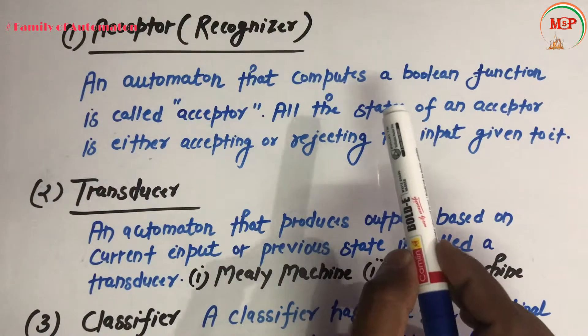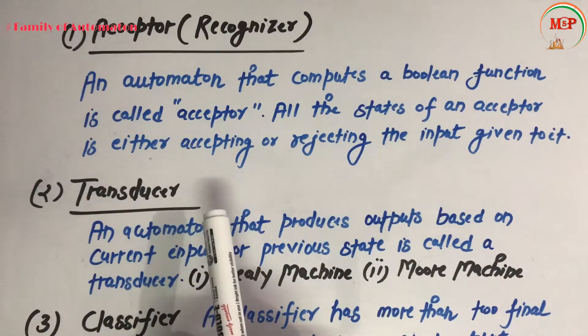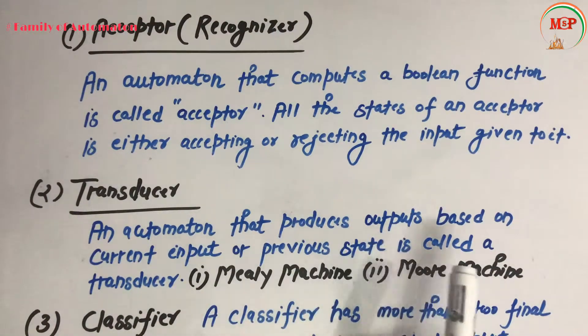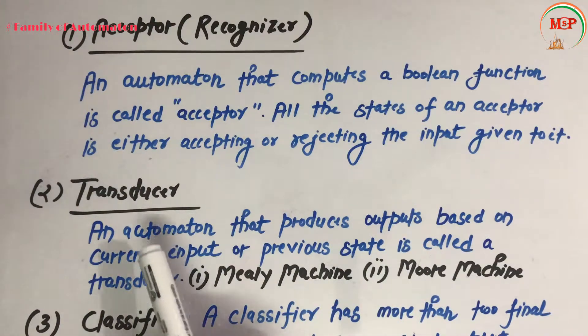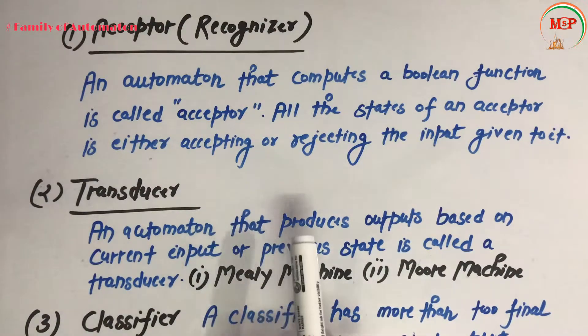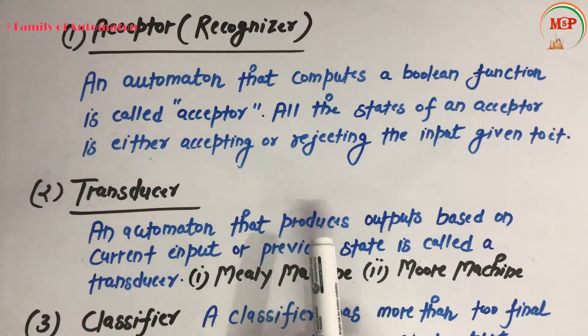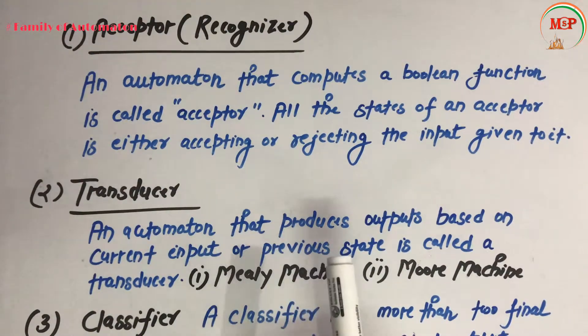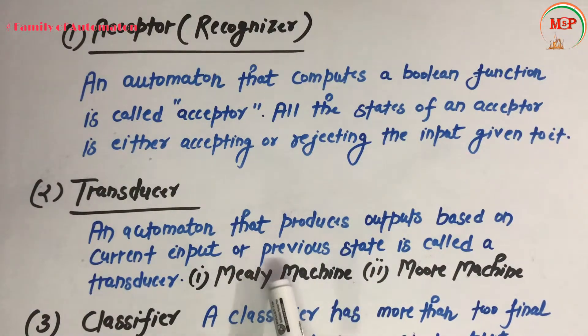The second definition is transducer. An automaton that produces output based on current input or previous state is called a transducer. There are two types of transducer: Mealy machine and Moore machine. We will see that later.